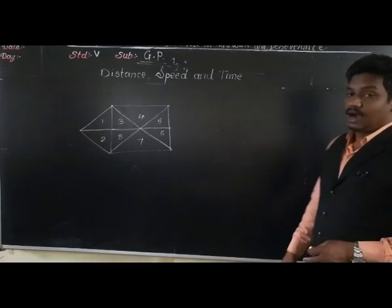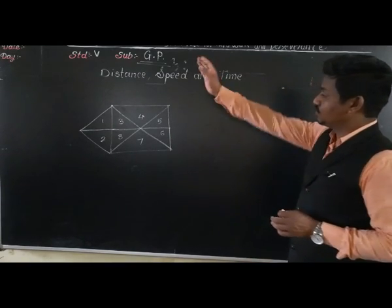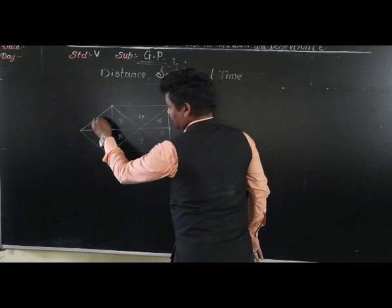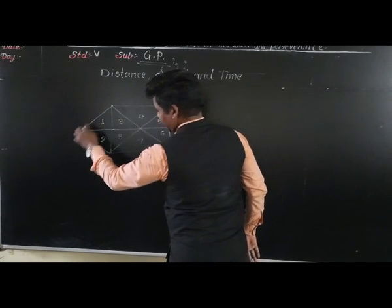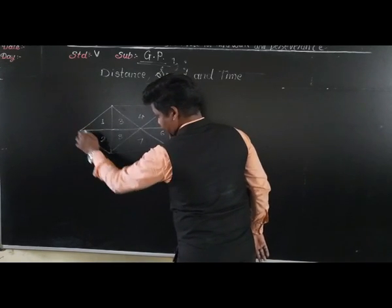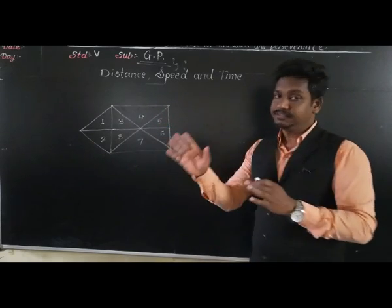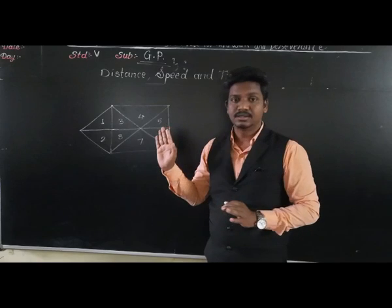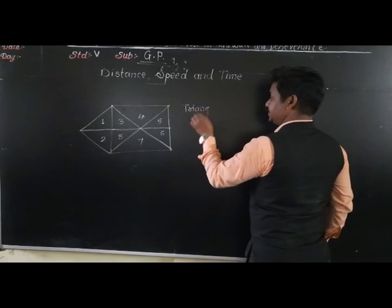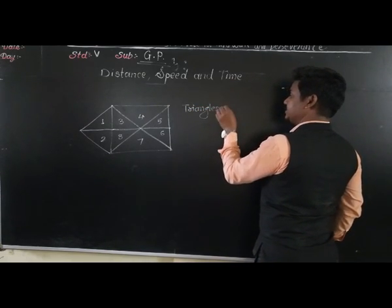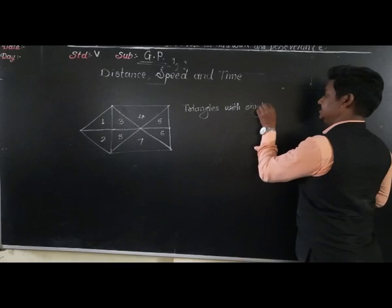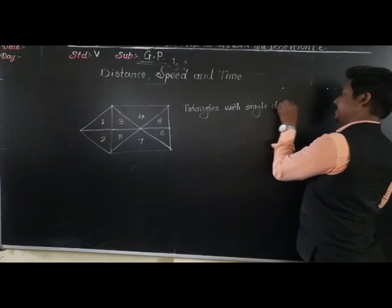Now, how to count the triangles. First, we will find the triangles made up of only one number — triangles with single digits. For example, see part 1. Is it a triangle? Yes. See part 2. Is it a triangle? Yes. We identify each independently.